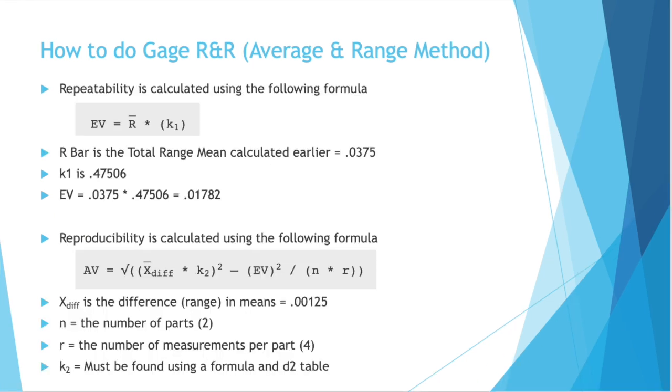Repeatability is then calculated using the following formula. ev equals r bar times k1. r bar is the total range mean that we calculated earlier between both operators, .0375. k1 we just got, .47506. ev then equals those two values multiplied by each other, .01782. That's our repeatability.